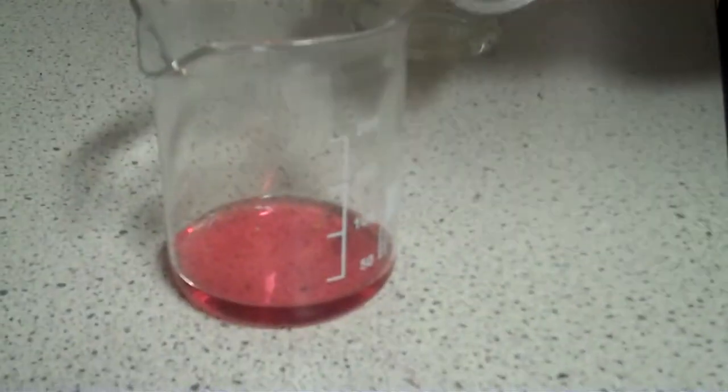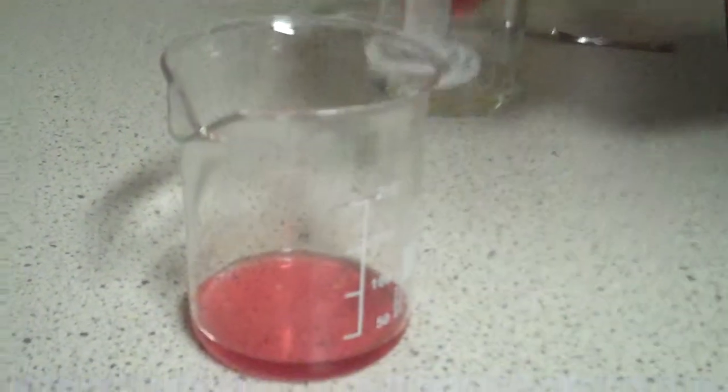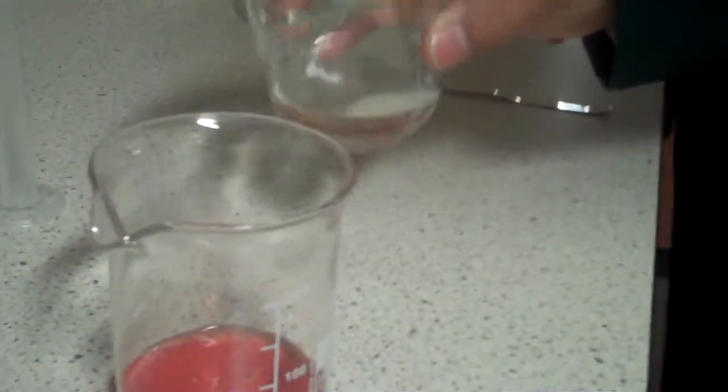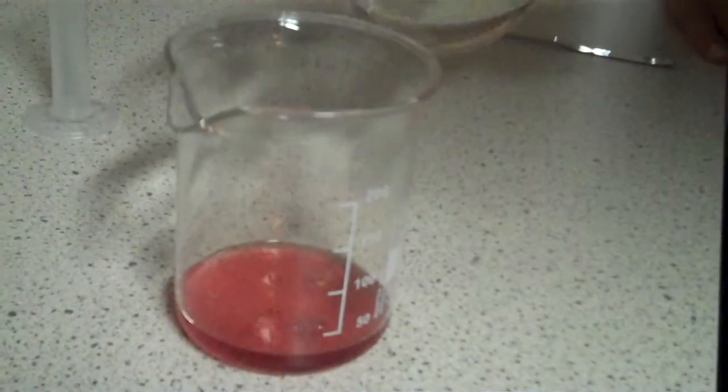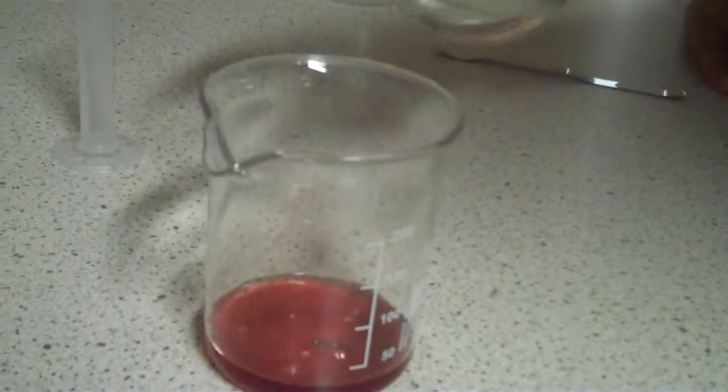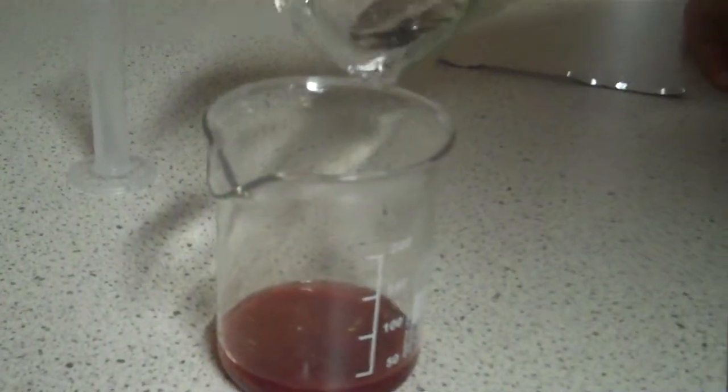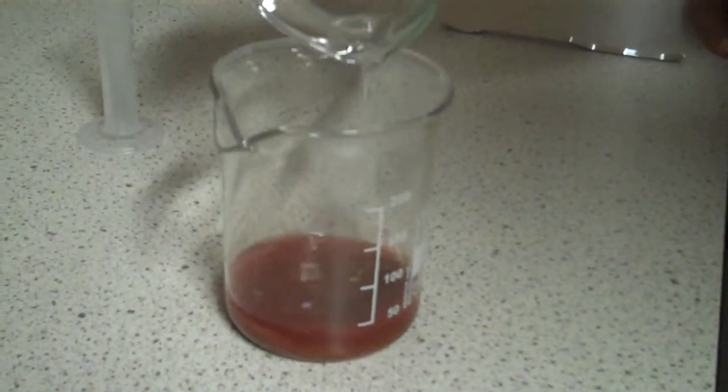Firstly what we do is add the acetic acid into the first beaker. Then we add the 8 grams of potassium nitrate solution slowly into the first beaker. And finally we filter it off.